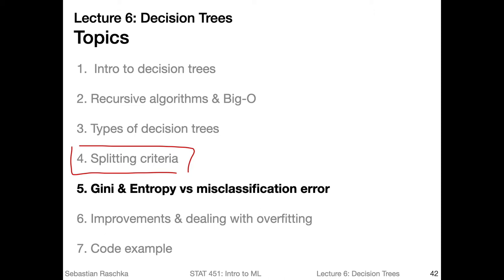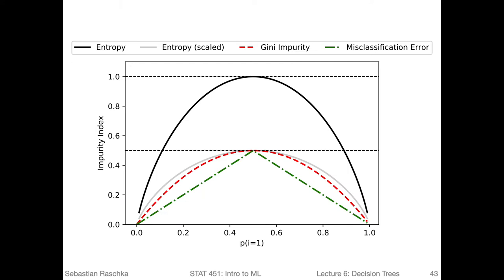In the previous video, we talked about the different splitting criteria that we can use to grow a decision tree. Now we are going to discuss why two of the splitting criteria, the Gini and the entropy, are to be preferred over the third splitting criterion, the misclassification error. So recall, we had these different splitting criteria - the entropy, the scaled version for comparison with the Gini impurity, and the misclassification error. Here is just a recap of the shape of those different impurity measures.